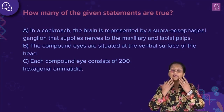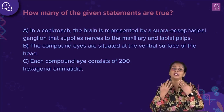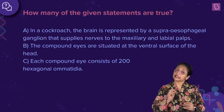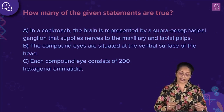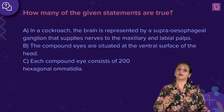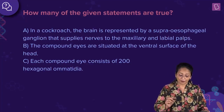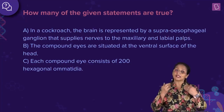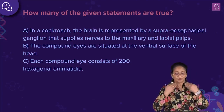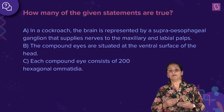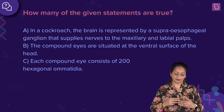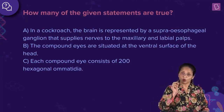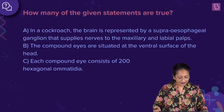Maxillary and labial palps are the mouth parts of the cockroach, and yes, this statement is correct. The brain is represented by the supraesophageal ganglion that supplies nerves to the maxillary and the labial palps. This is correct, so this statement is right.